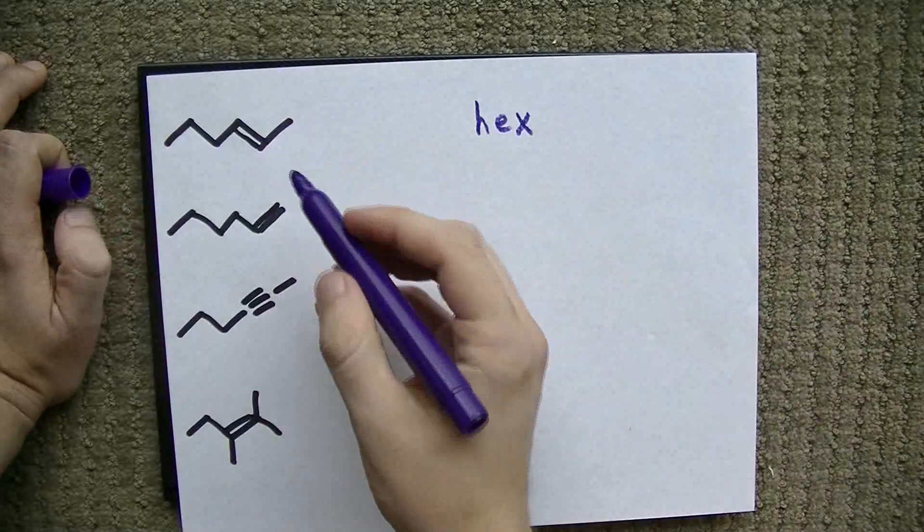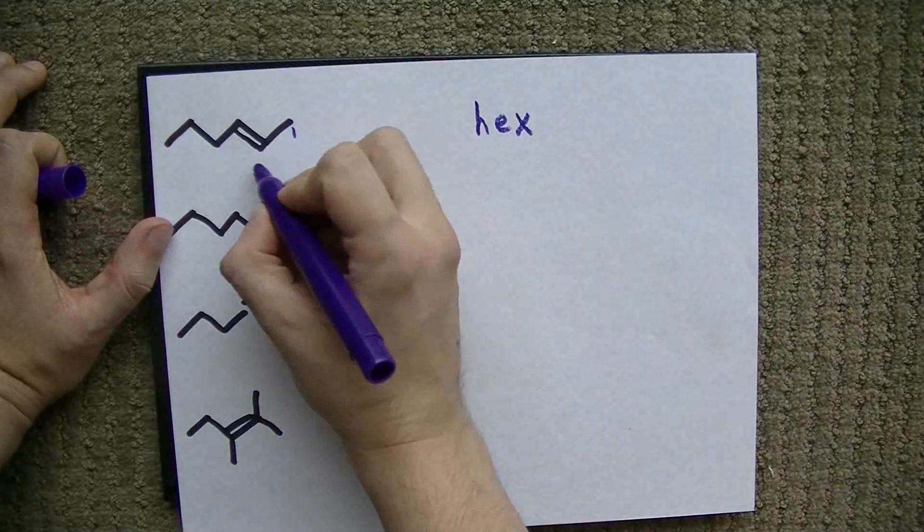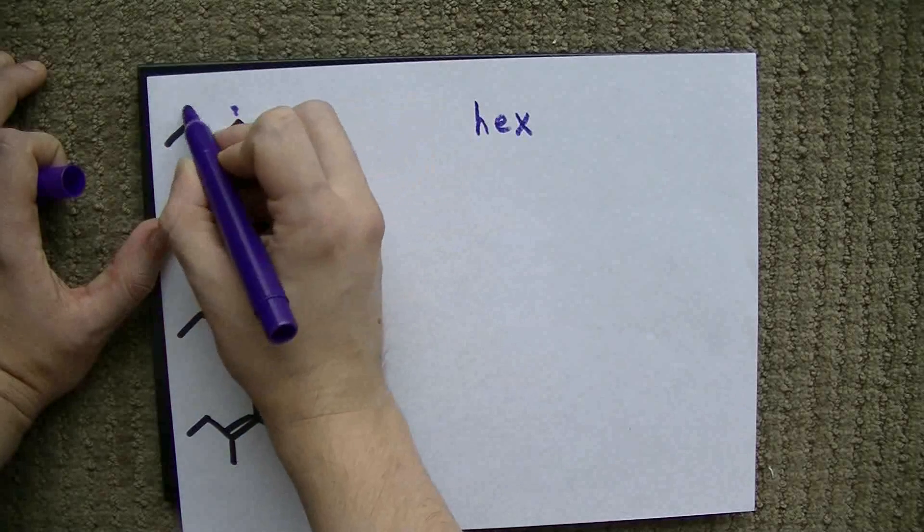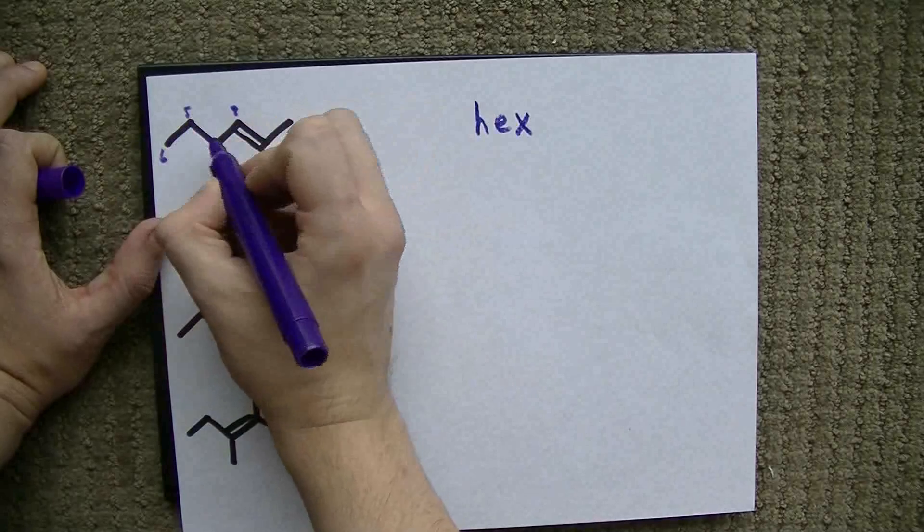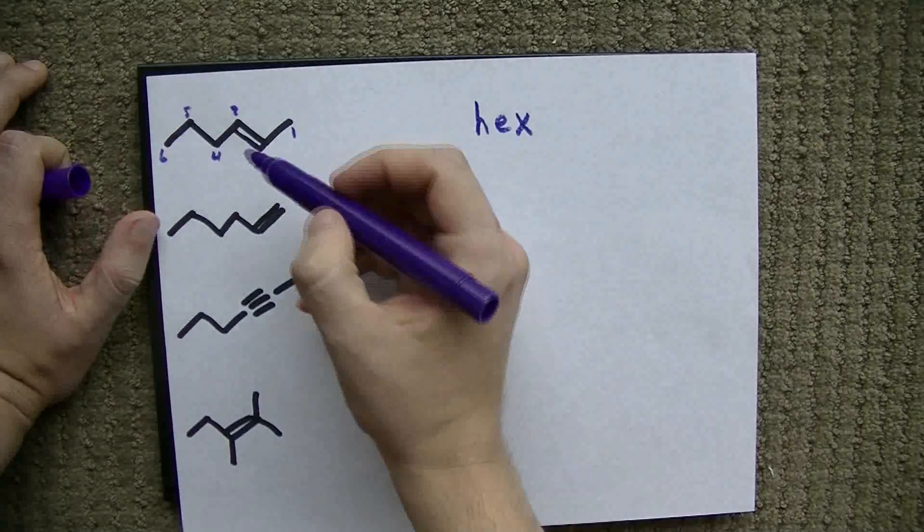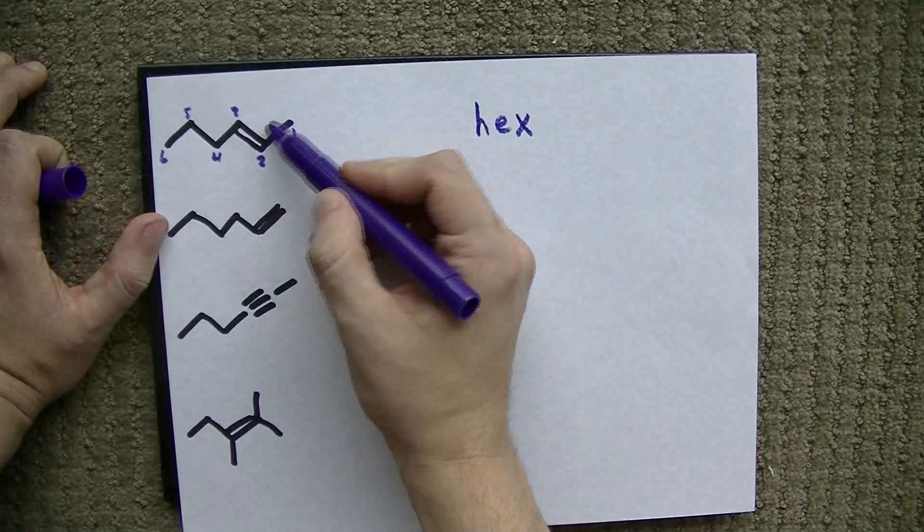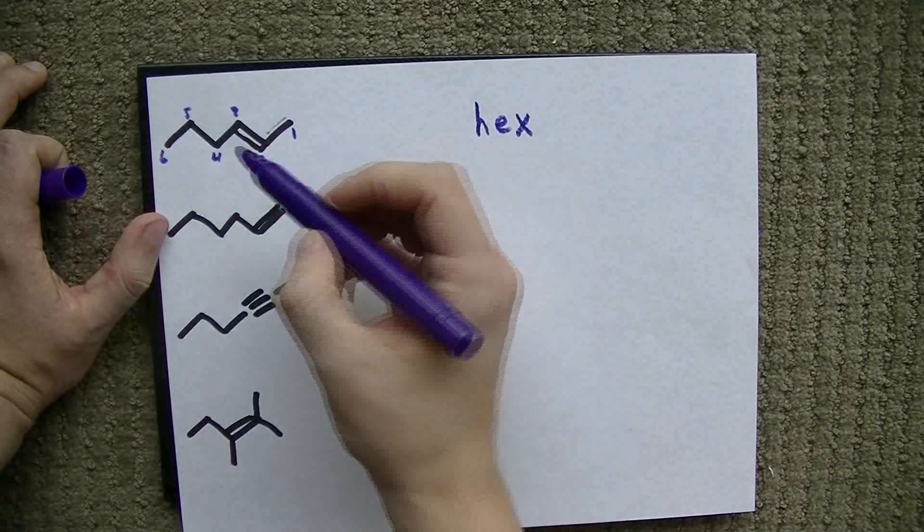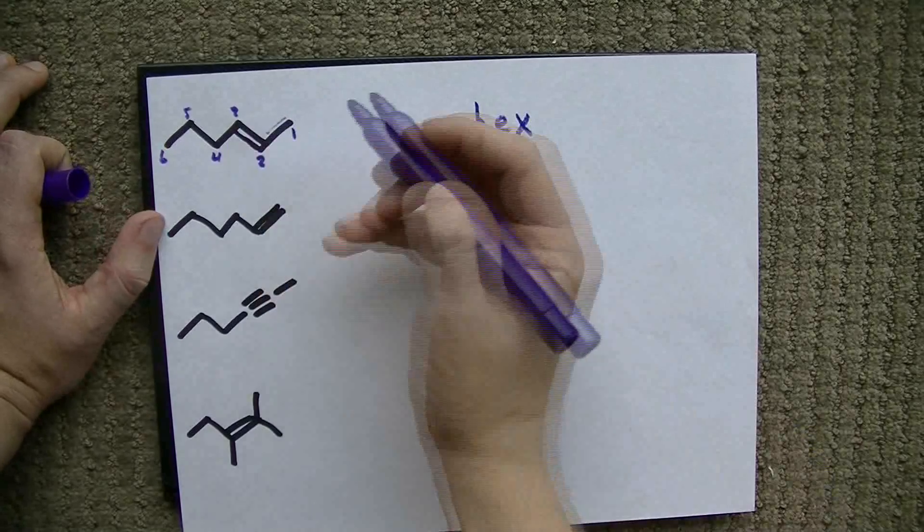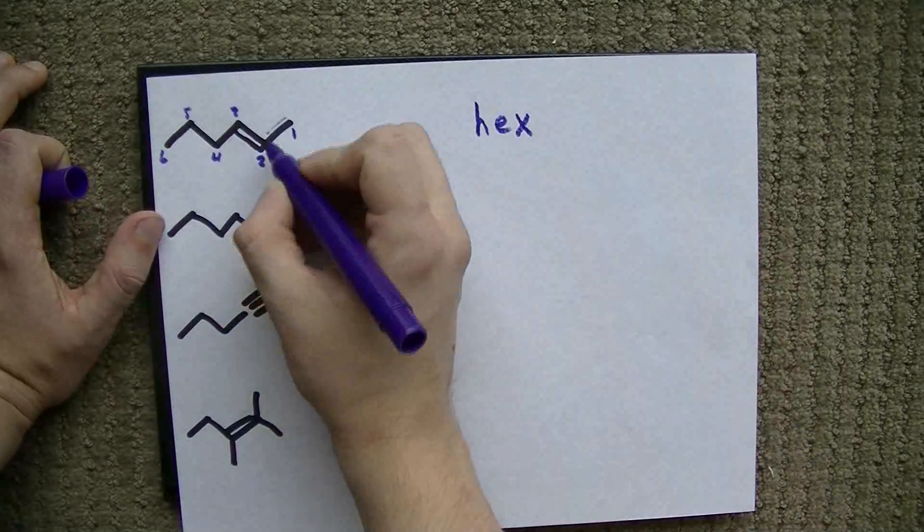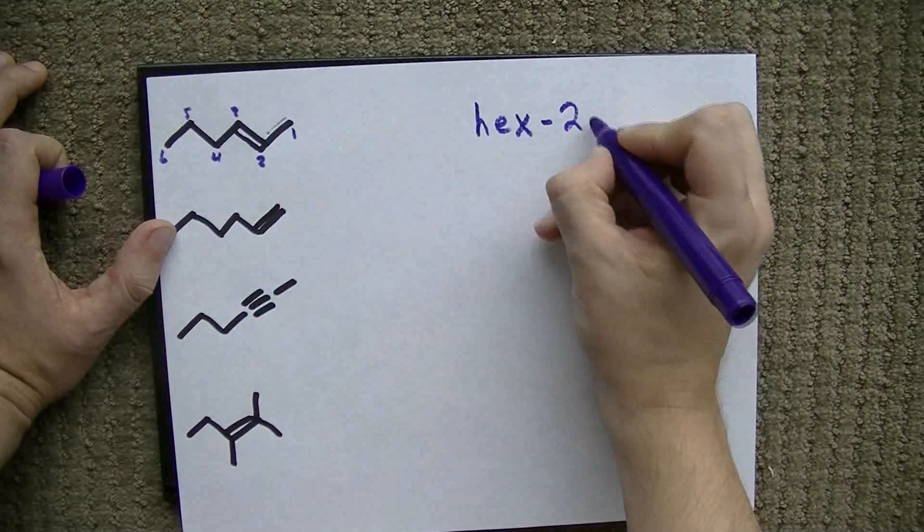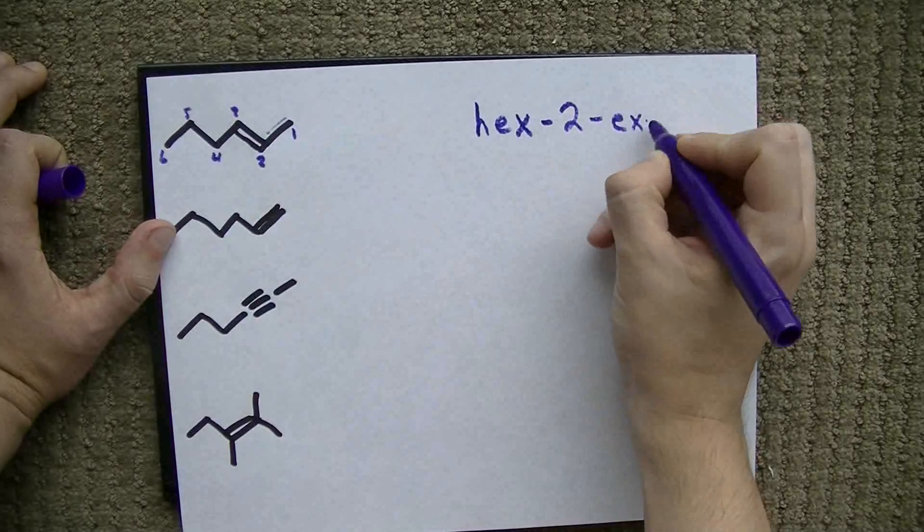Now, the double bond starts at carbon 1, 2. If we labeled it from the other direction, it would be 1, 2, 3, 4, and 2 is the lower number, so we prefer 2. Now, this double bond could have been between the first two carbons, it could have been between the third and the fourth carbon, but no, it's here. We have to tell people that the double bond starts at carbon 2, and so we call this hex-2-ene.